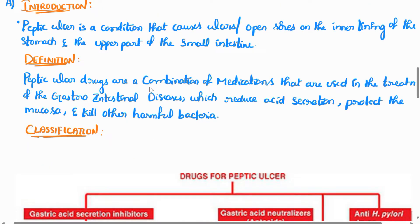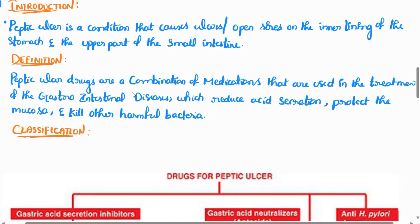Next is the definition. Peptic ulcer drugs are a combination of medications used in the treatment of gastrointestinal diseases which reduce acid secretion, protect the mucosa, and kill harmful bacteria. So peptic ulcer drugs are used in this combination for gastrointestinal diseases.